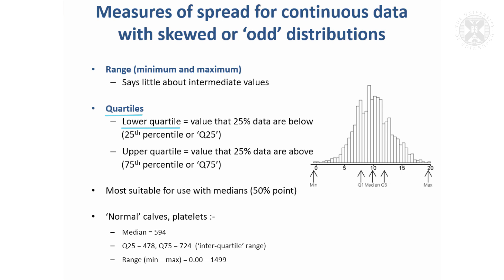Obviously, the median might be a good way — which is the centre point — a good way to get a measure of centrality. But if your distribution is really quite odd, one way to measure the spread of the distribution is using something called quartiles.